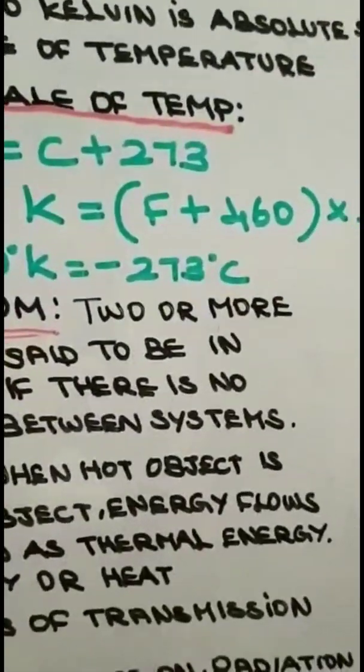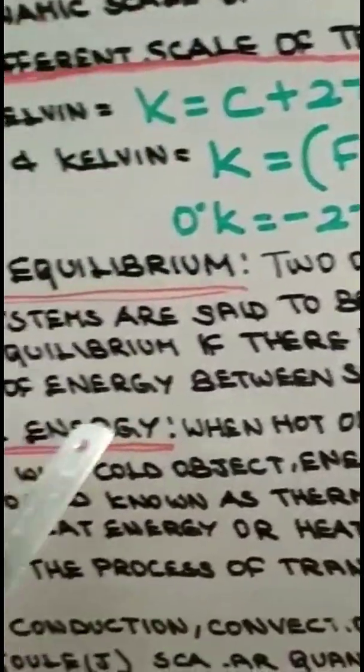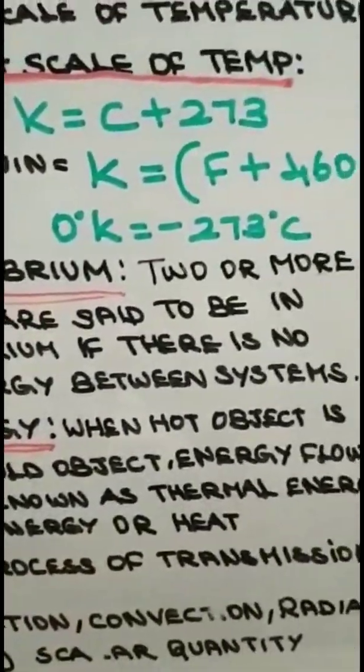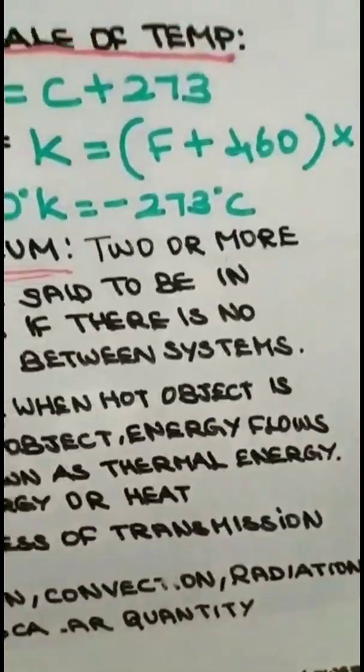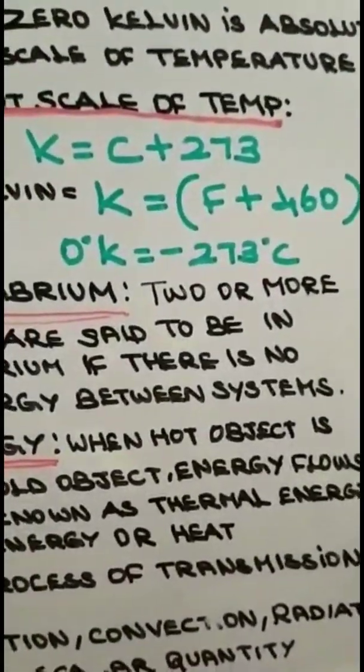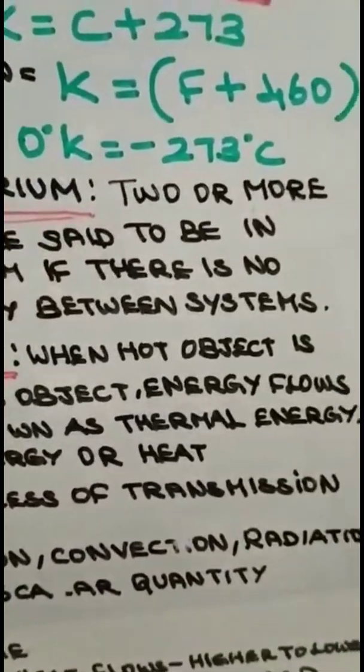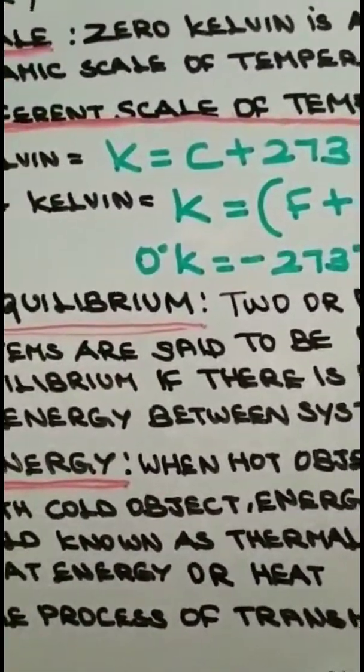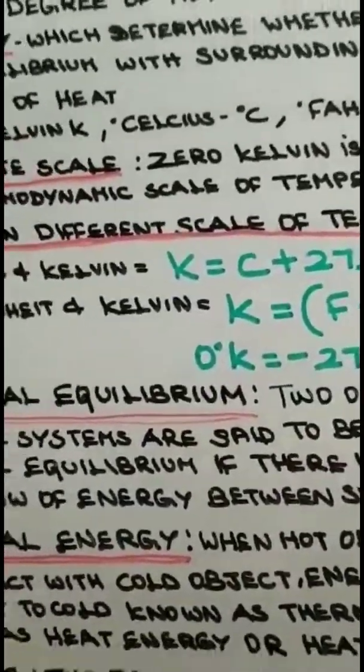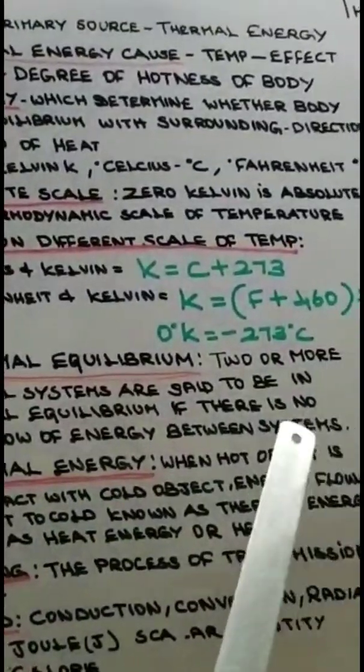Next, now we are going to see what is thermal equilibrium. When two or more physical systems are said to be in thermal equilibrium if there is no net flow of energy between systems. When we take two bodies, one may be hot and other may not be hot. At this time, the energy will be transferred from the hot body to the cold body until both attain the same temperature. So this transfer of energy in order to attain equilibrium condition in both the bodies is said to be thermal equilibrium. This is said to be in thermal equilibrium only if there is no net flow of energy between the systems.